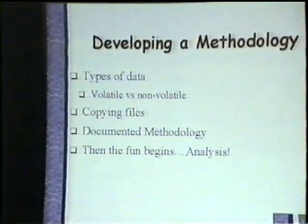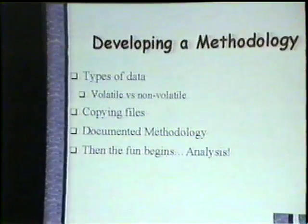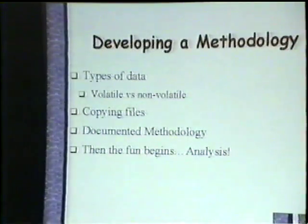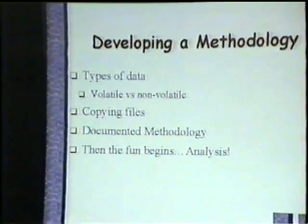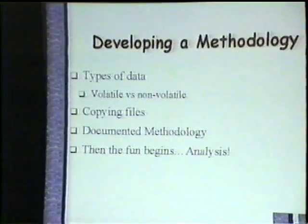When we develop a methodology, we want to look at the types of data we hope to get from the box — what information are we interested in collecting on the basis of an incident? We have volatile and non-volatile data. This is a documented methodology where you can make decisions along the way — 'I decided not to do this step because here's my justification.' Based on information you collect, you can say 'there doesn't seem to be a Trojan on the system, so I opted not to do these steps.' Then the fun begins when you start doing analysis of the data you collect.